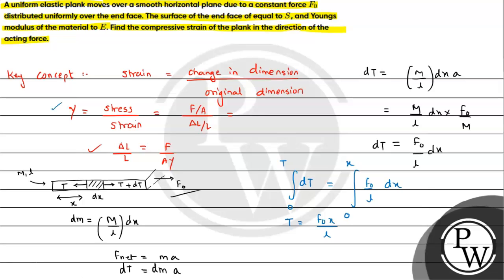Now from the result we can write delta L value for a small section as F, which is T for us, times length dx upon area S times Y, which is given as E. Further, substituting T value from the expression above, we get F0 x dx upon LSE.